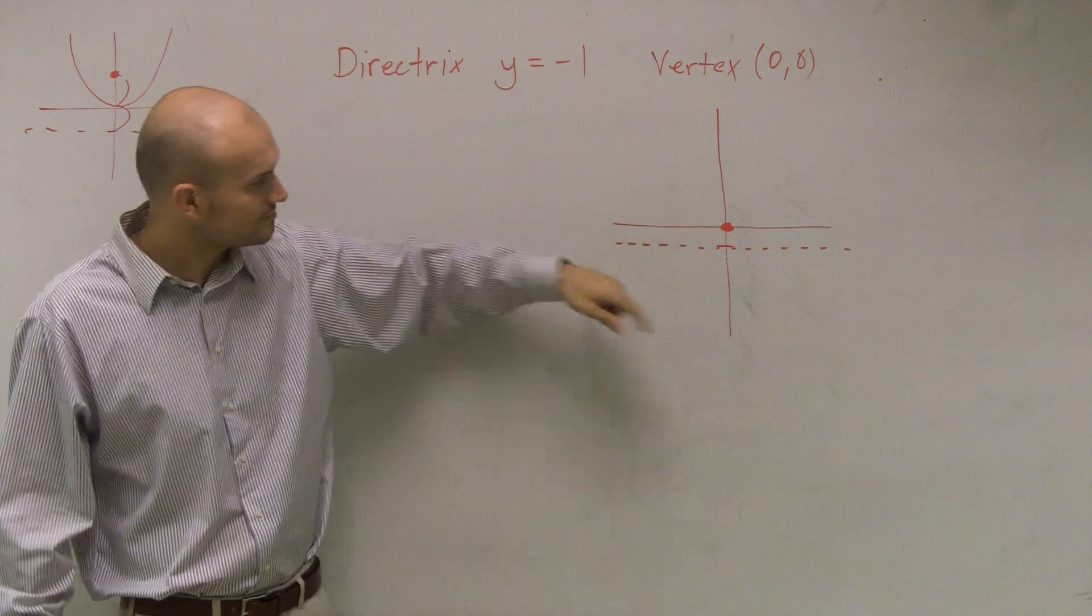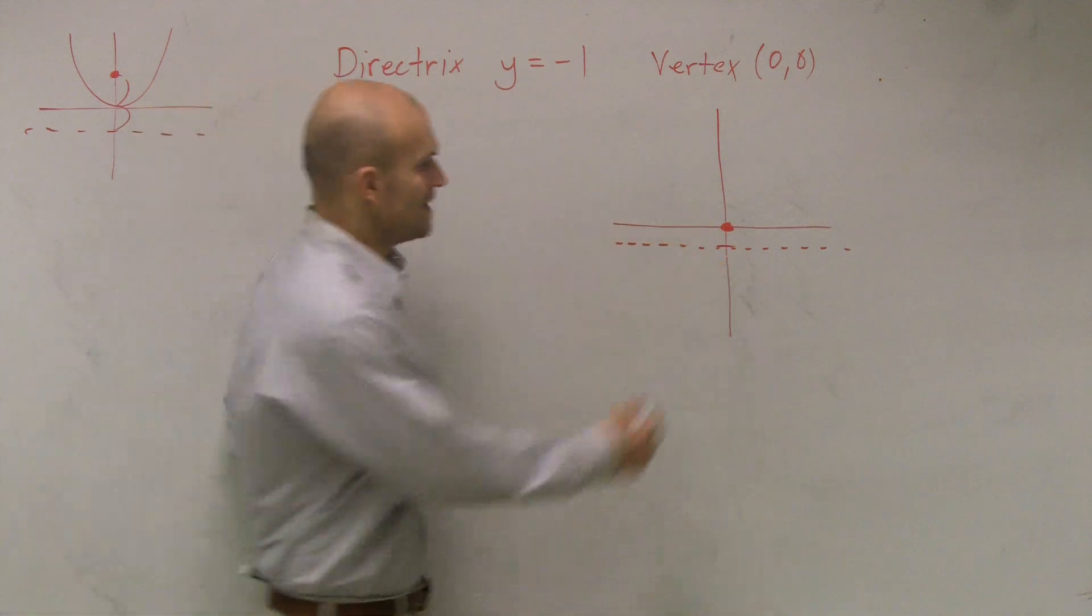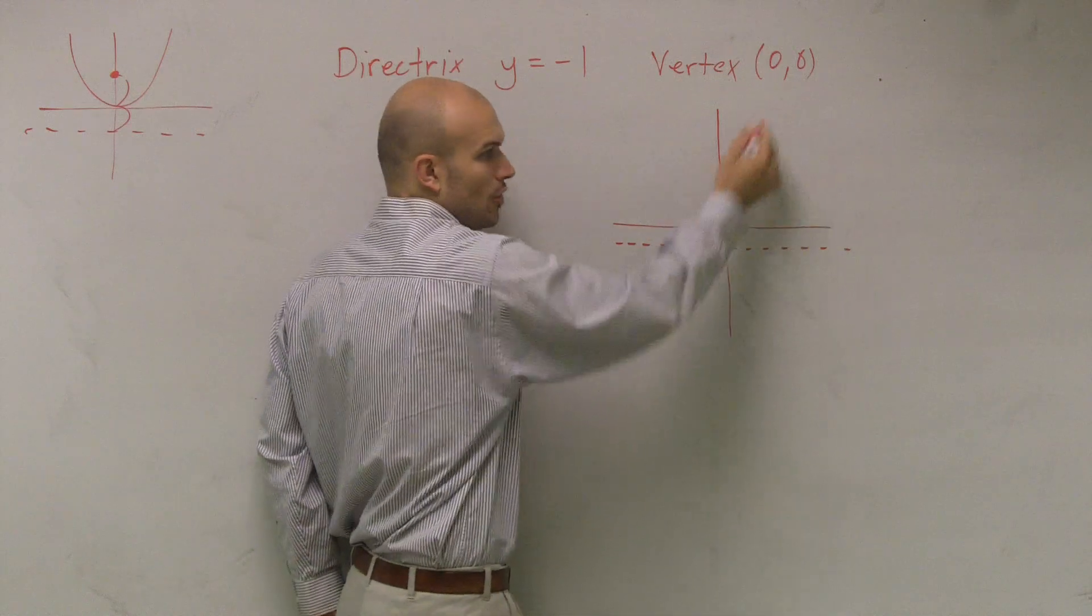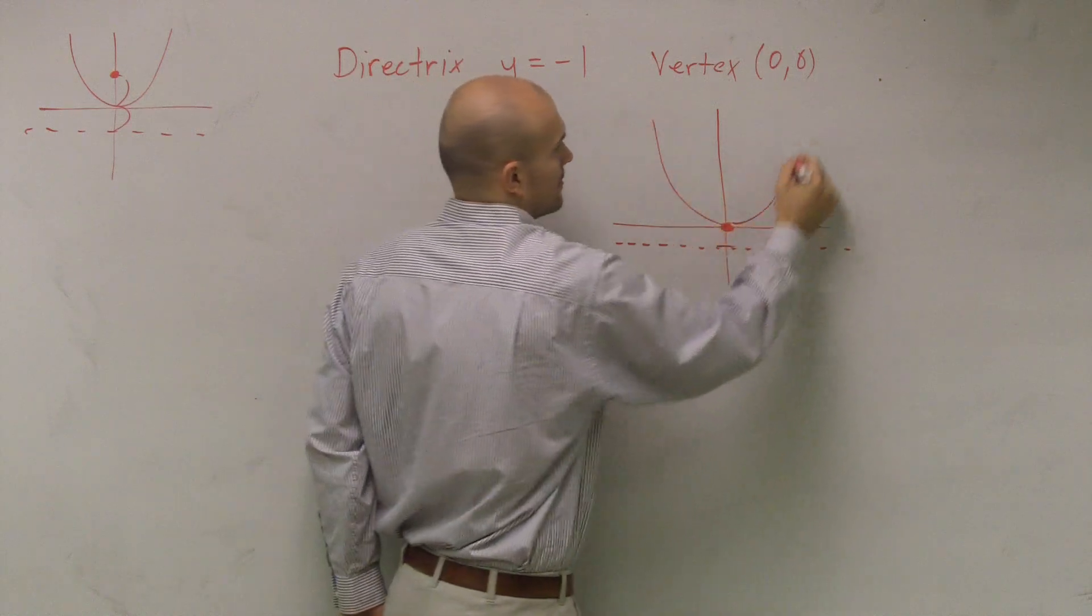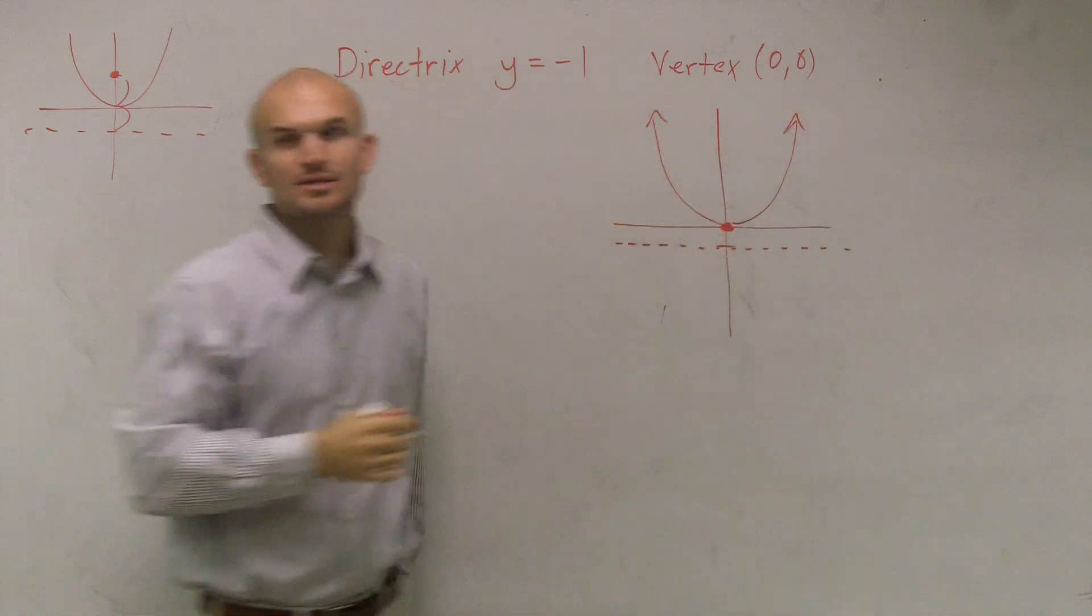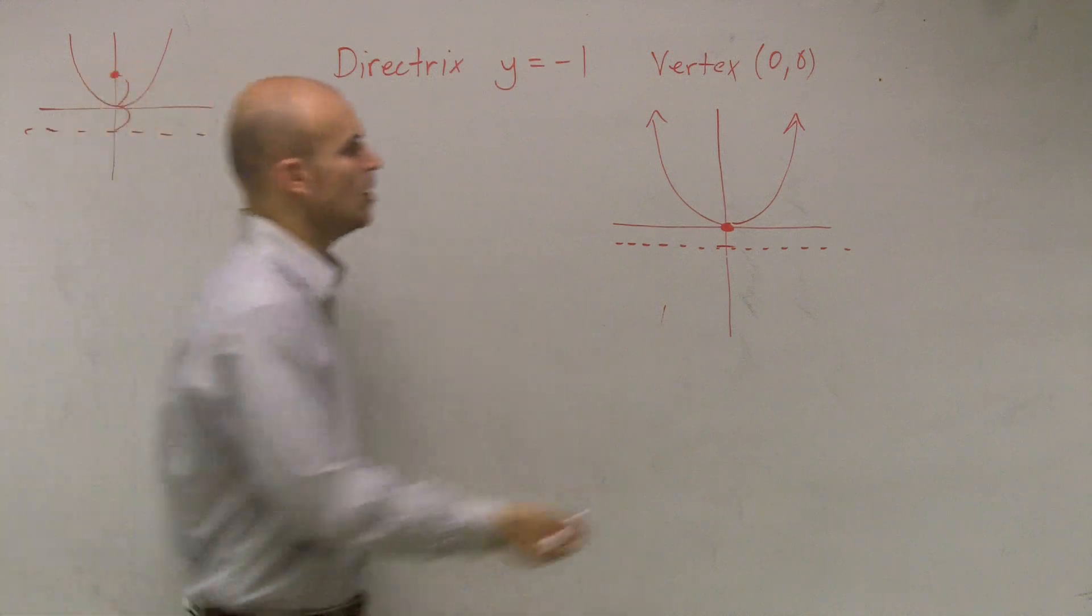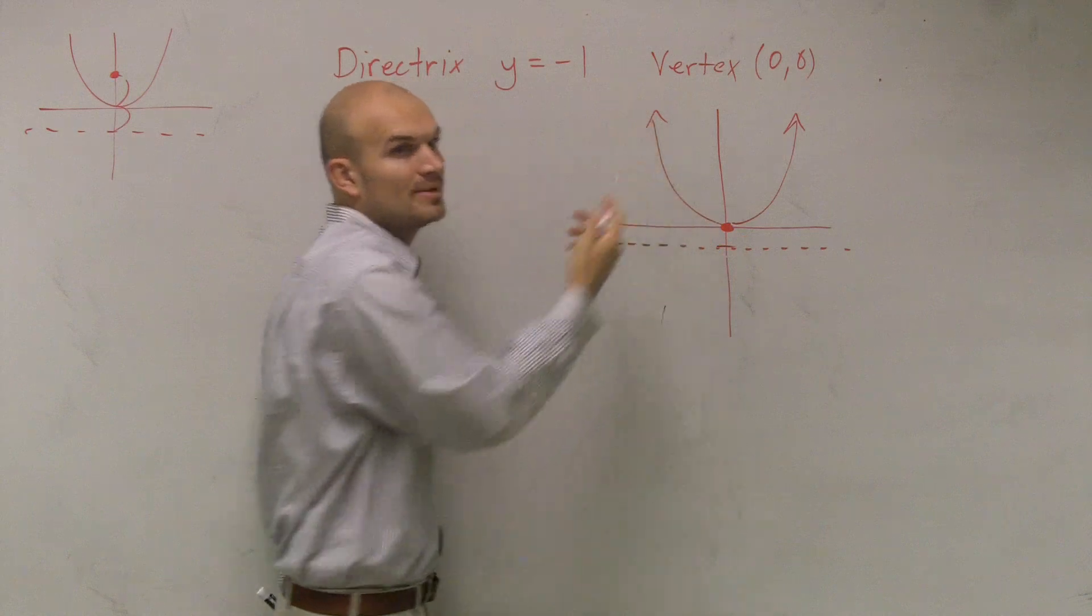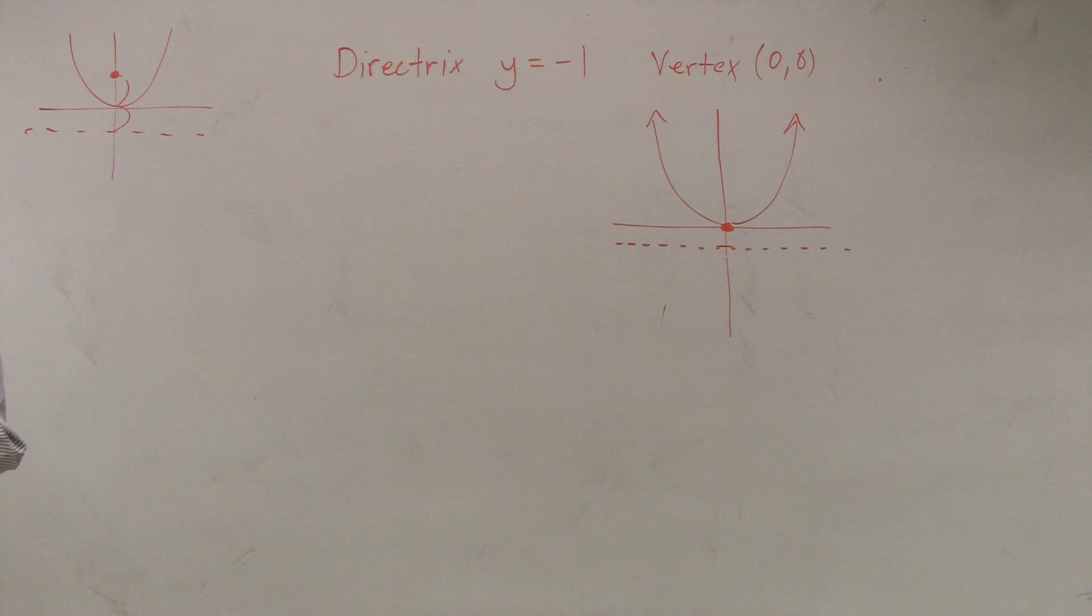So if my directrix is right here, and we have a vertex, can the parabola open down like that? No. It's going to have to open up. Does that answer your question? And the same thing. If I would have said the focus is like right here, then you would have known you had to go up, because your parabola's going to have to encompass your focus.